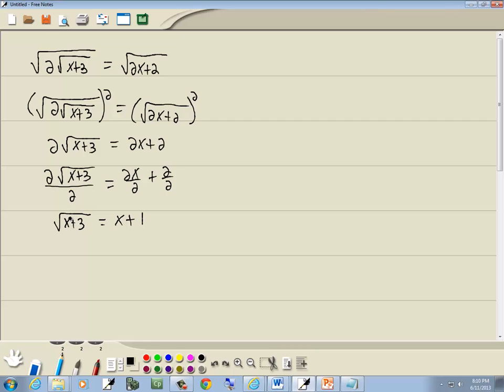So we get square root of x plus 3 is equal to x plus 1. So we've got the radical by itself. Step 2. Raise both sides to a power equal to the index. This is the square root, so we'll square both sides. So we've got the square root of x plus 3 squared is equal to x plus 1 squared. The square root and the second power cancel each other and leave us the x plus 3. Over on the right side, x plus 1 squared is x plus 1 times x plus 1.